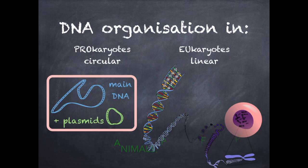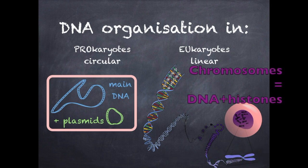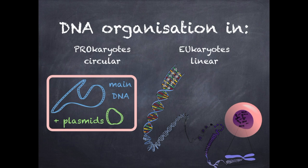In eukaryotes, such as animals, plants, fungi, and protists, DNA is found inside the cell nucleus as nuclear DNA, which is organized into structures called chromosomes with the help of chromatin proteins known as histones. Except in the nucleus, some of the eukaryotic DNA is found in the mitochondria as mitochondrial DNA or in chloroplasts as chloroplast DNA.